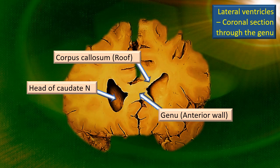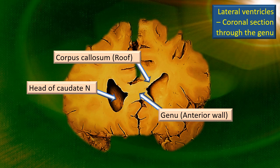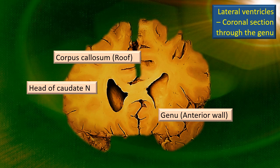This is a coronal section of the anterior horn, specifically across the genu of the anterior horn. Here you can see the large head of the caudate nucleus — it's a little behind this plane of section. The corpus callosum is the roof, and the genu is the anterior wall.